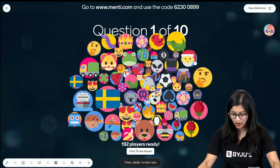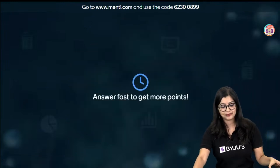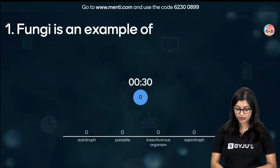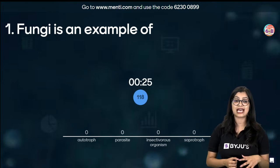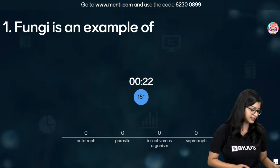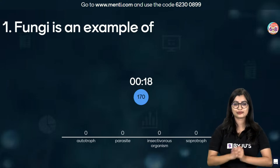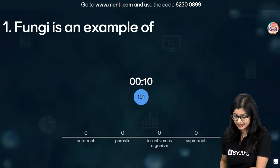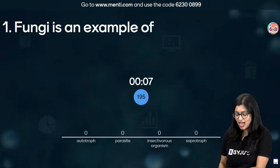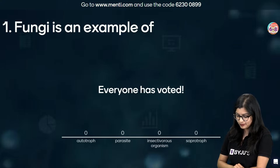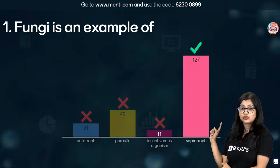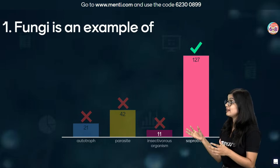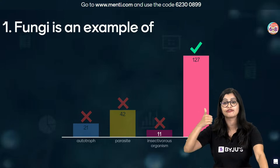Let's get started. Question number one: fungi is an example of what - autotroph, parasite, insectivorous organism, or saprotroph? Easy question - you'll all be able to get the answer. 183 of you are here and I know most of you know the answer. Very good all of you - fungi is an example of a saprotroph that exhibits saprotrophic mode of nutrition wherein they grow on dead and decaying matter.